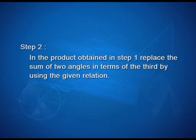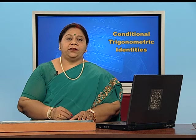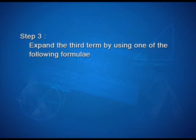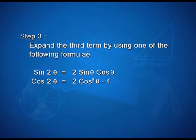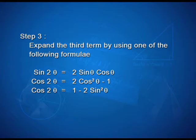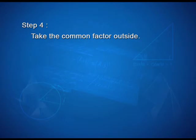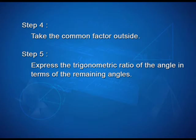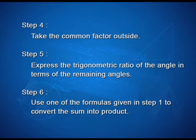In step 2, in the product obtained in step 1, replace the sum of two angles in terms of the third by using the given relation. In step 3, expand the third term using formulae such as sin 2θ equals 2 sin θ cos θ, cos 2θ equals 2cos²θ minus 1, or cos 2θ equals 1 minus 2sin²θ. In step 4, take the common factor outside. In step 5, express the trigonometric ratio of the angle in terms of the remaining angles. In step 6, use one of the formulae from step 1 to convert the sum into a product.